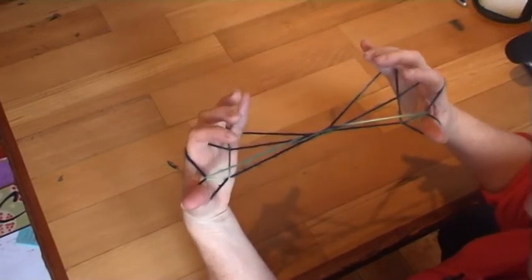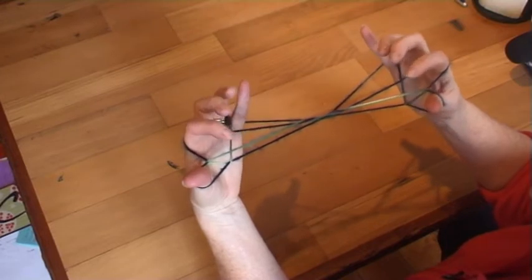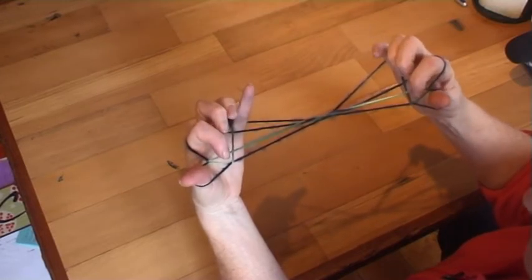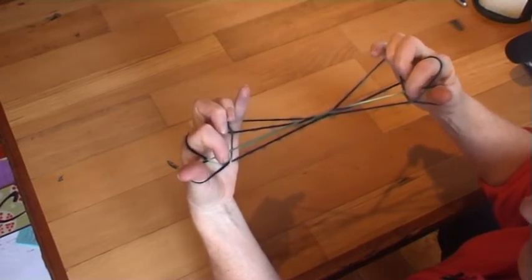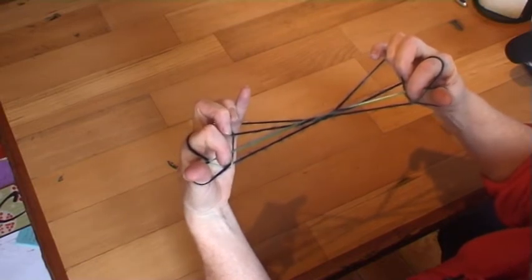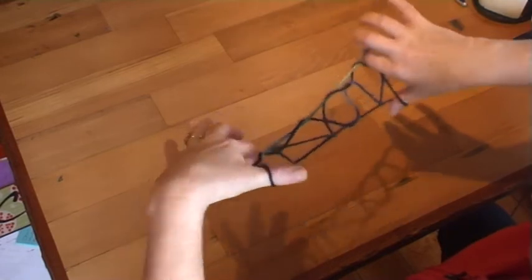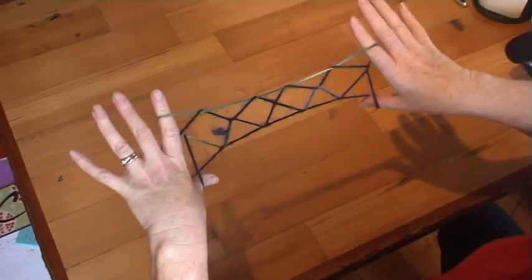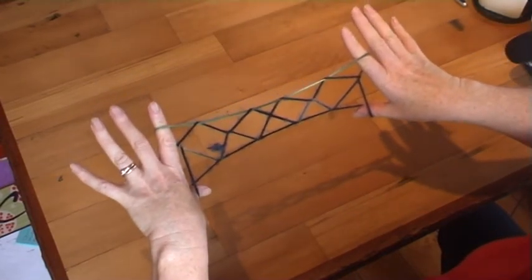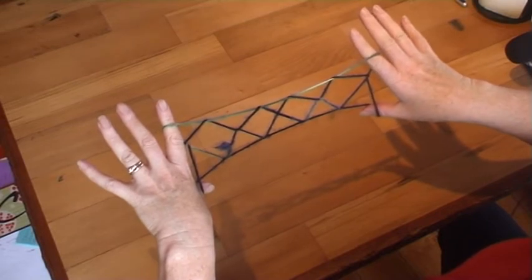This is the last part. Take your index fingers into the triangles. Hold your index fingers and your thumbs tight, pushing all the other strings away from you and off your fingers. This is Jacob's Ladder.